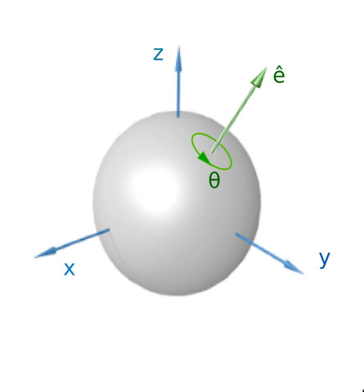The complex-valued matrices analogous to real orthogonal matrices are the unitary matrices. The set of all unitary matrices in a given dimension N forms a unitary group U(N), and its subgroup representing proper rotations is the special unitary group SU(N). These complex rotations are important in the context of spinors. The elements of SU(2) are used to parametrize three-dimensional Euclidean rotations, as well as respective transformations of the spin.